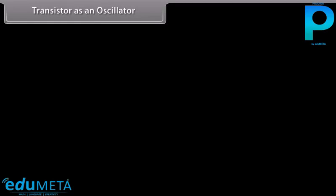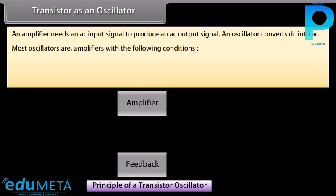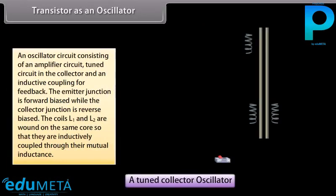Transistor as an oscillator: an amplifier needs an AC input signal to produce an AC output signal, whereas an oscillator converts DC into AC. Most oscillators are amplifiers with positive feedback from the output to the input, and the amplifier gain must be greater than the loss in the feedback path. An oscillator circuit consists of an amplifier circuit, a tuned circuit in the collector, and an inductive coupling for feedback. The emitter junction is forward biased while the collector junction is reverse biased. Coils L1 and L2 are wound on the same core and are inductively coupled through mutual inductance.